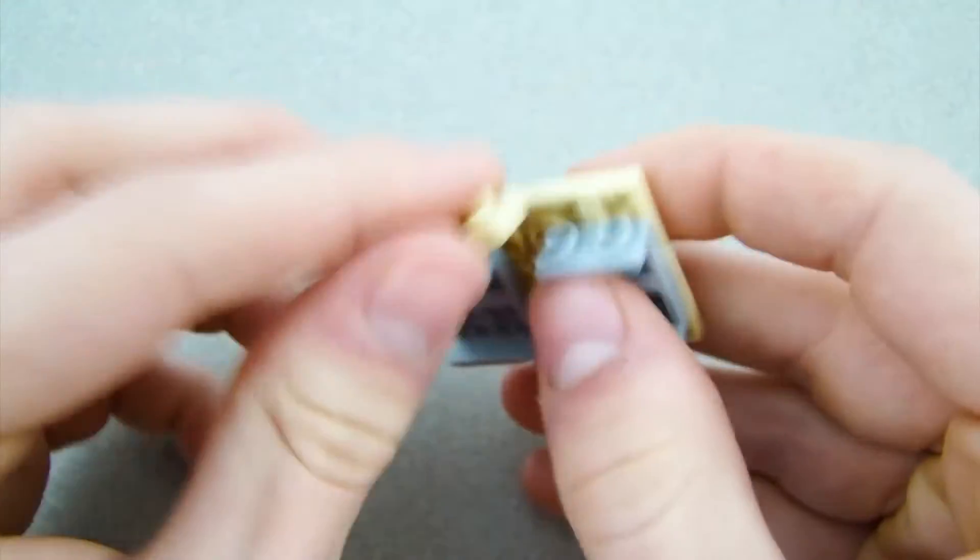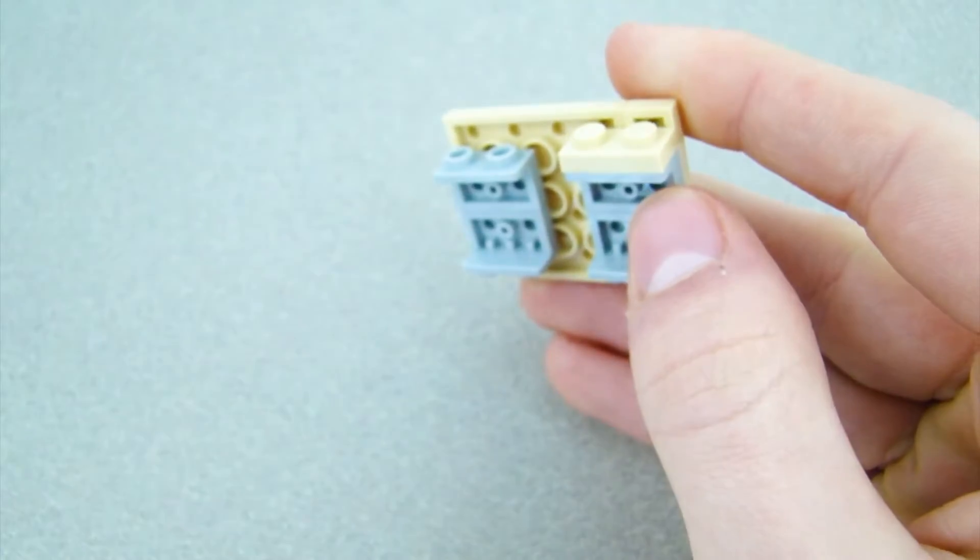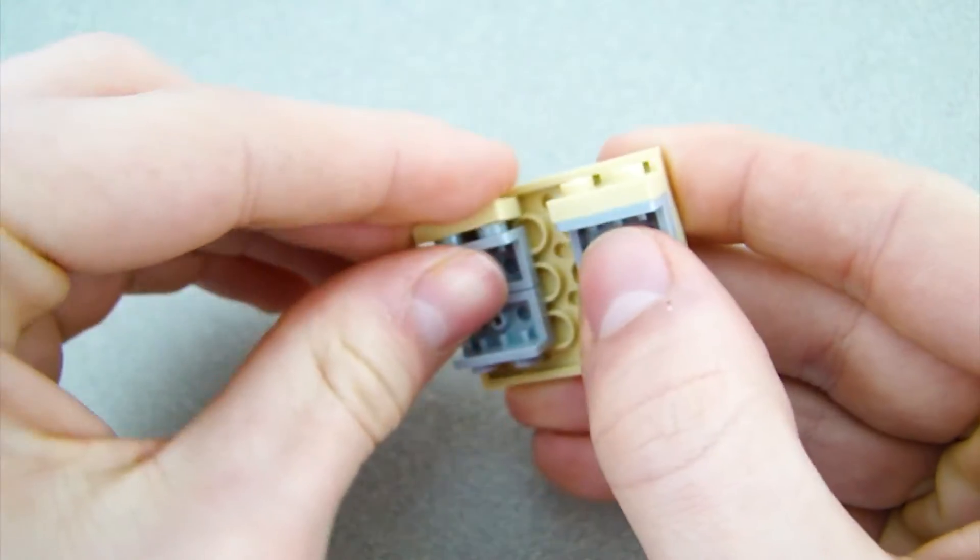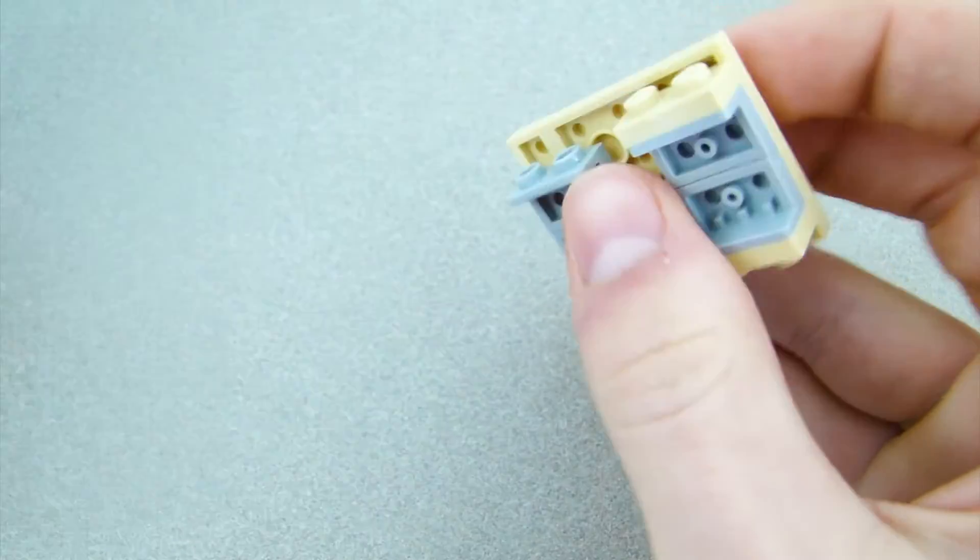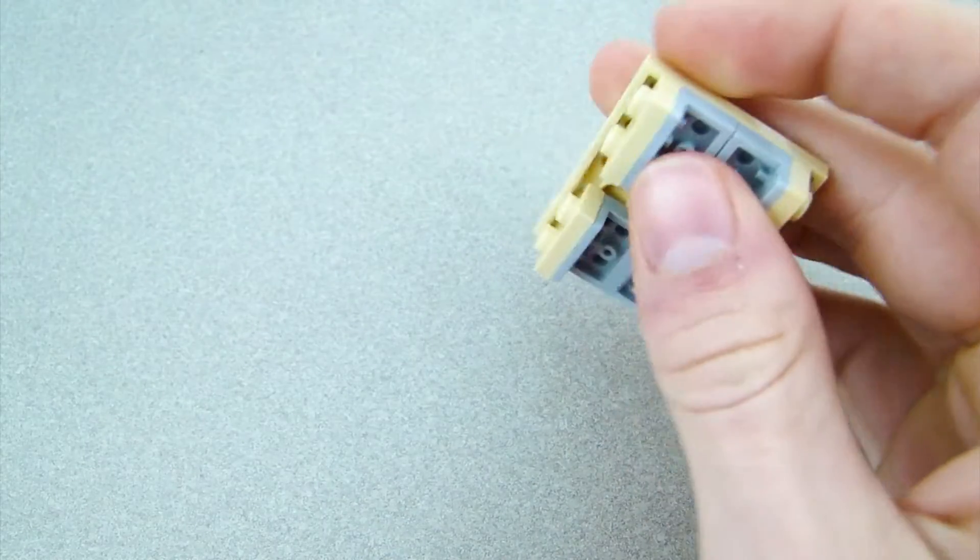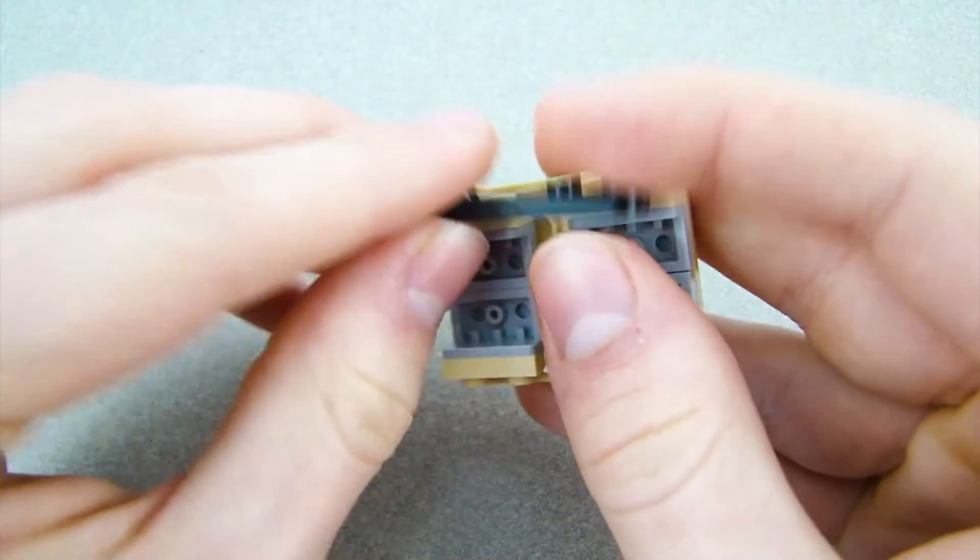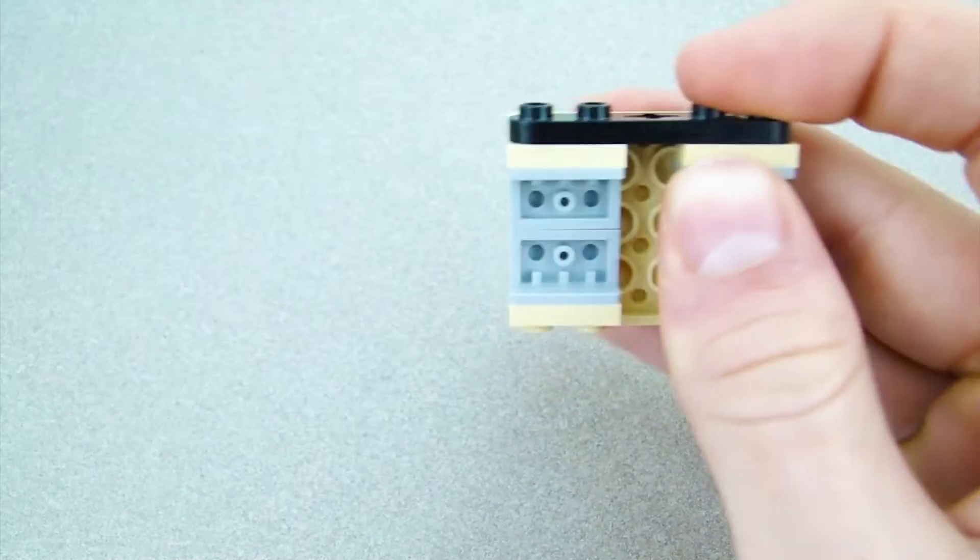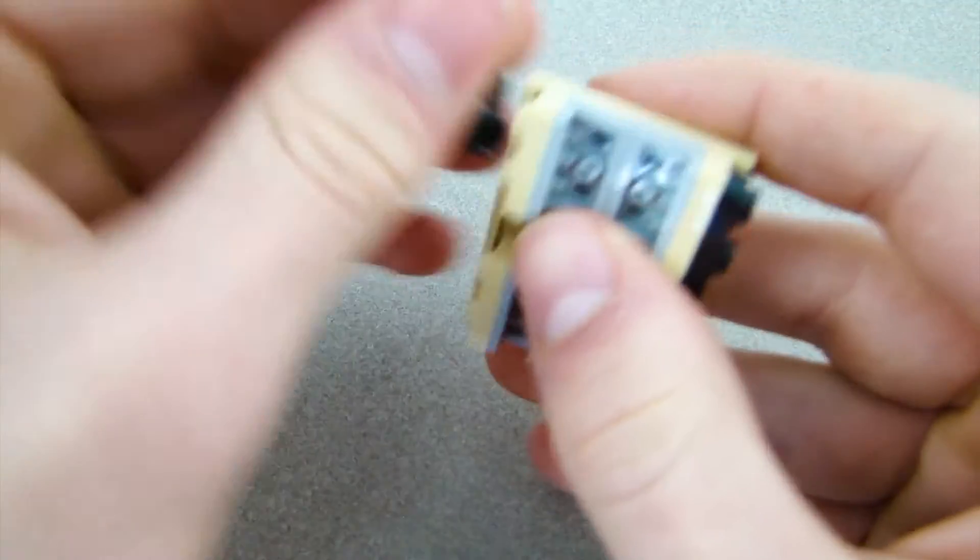And then on every one of these, put a 1x2 plate right there on all these. And then on top of that, you're going to want to put these two 1x5 plates on both sides. So you've got the treads down.